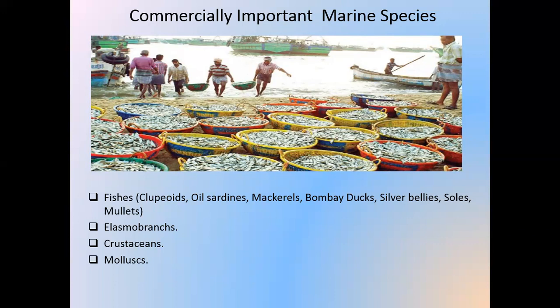According to elasmobranch groups, generally sharks, skate fishes, guitar fishes, rays, and chimeras are the important species. More than 155 species of elasmobranchs are found in India. The smallest shark found in Indian waters is called Eridacnus radcliffei, and the largest shark, Rhincodon typus, are found in Indian water bodies.